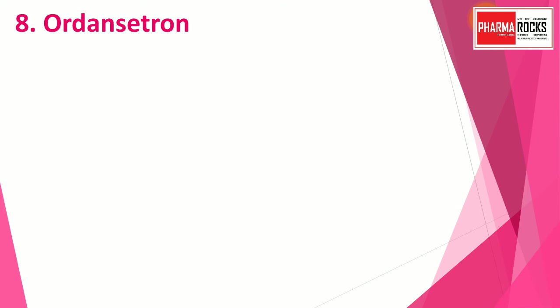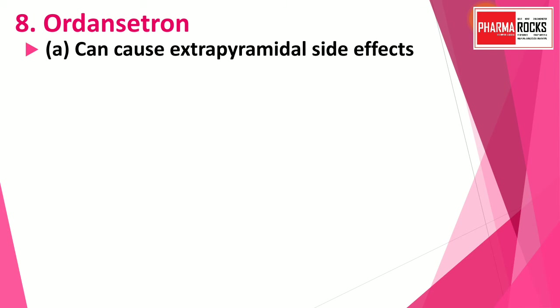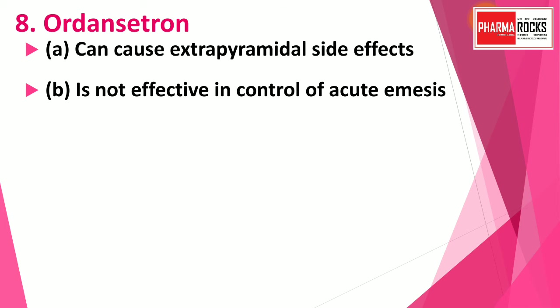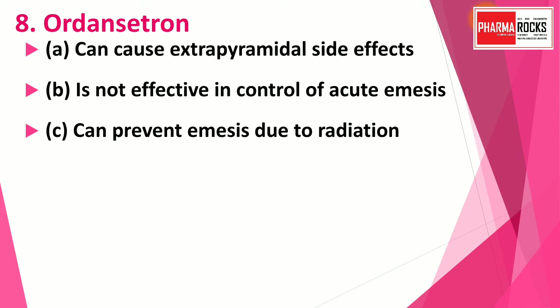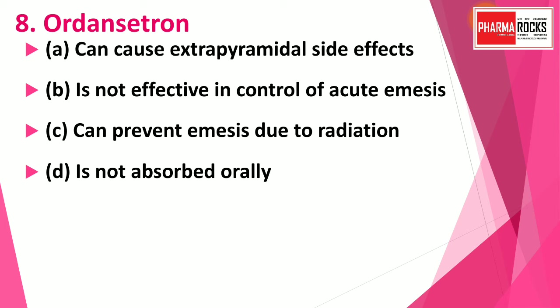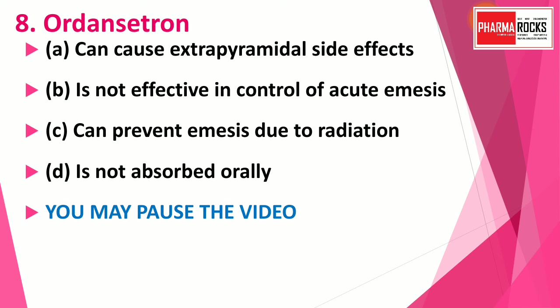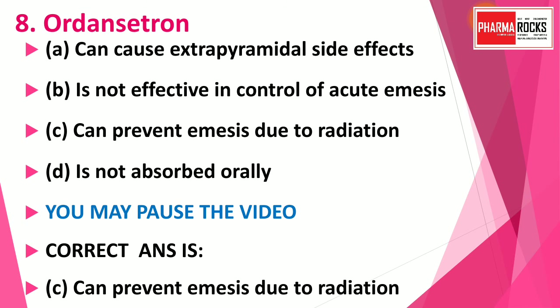Question number eight: Ondansetron — option A: can cause extrapyramidal side effects; option B: is not effective in control of acute emesis; option C: can prevent emesis due to radiation; option D: is not absorbed orally. The correct answer is option C — Ondansetron can prevent emesis due to radiation.